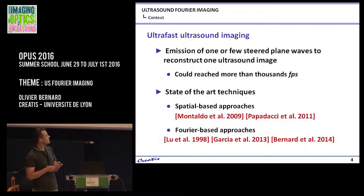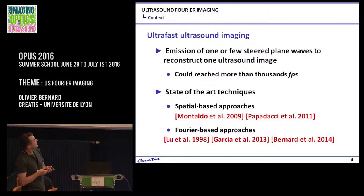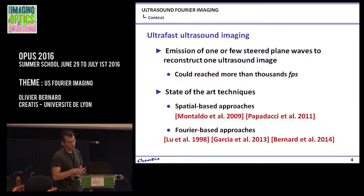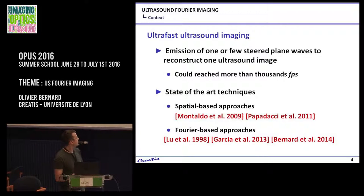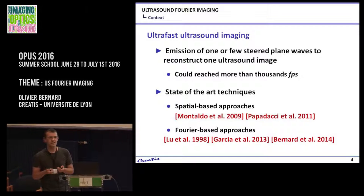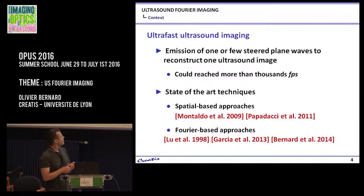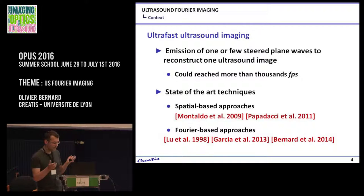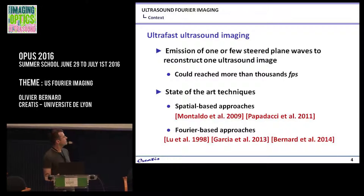In ultra-fast imaging, the idea is to try to reconstruct more than 5,000 frames per second. If you look at the different methods that have been proposed, there are two kinds: the spatial-based approach and the Fourier-based approach. I will discuss the Fourier-based approach, but first I need to briefly explain how the spatial-based approach works.